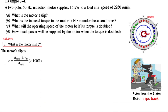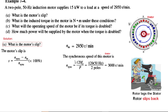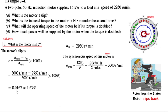The equation for slip is: slip = (n_sync − n_motor) / n_sync × 100%. The motor speed is given as 2950 RPM. We calculate sync speed using the formula: n_sync = 120 × f / P = 120 × 50 / 2 = 3000 RPM. From here, slip = (3000 − 2950) / 3000 = 0.0167, or 1.67%. That is the first part.